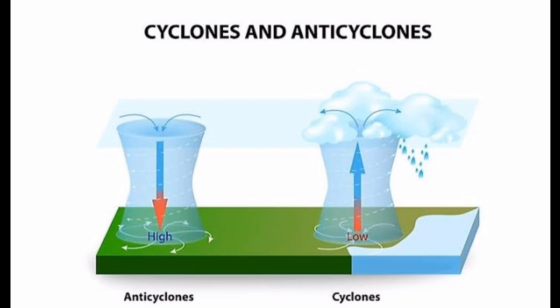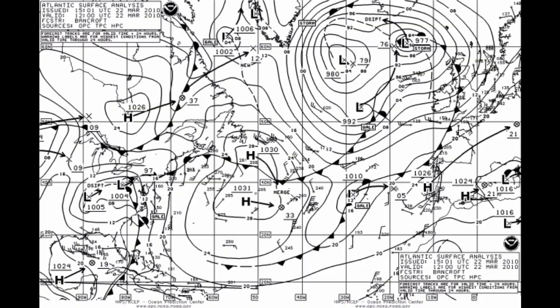The center of an anti-cyclone has a characteristic pattern of air circulation, with subsiding air and horizontal divergence of the air near the surface. Winds, generally light, circulate around the high pressure center in a clockwise direction in the northern hemisphere and anti-clockwise in the southern hemisphere.